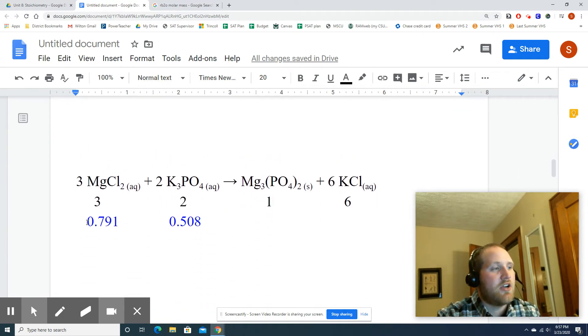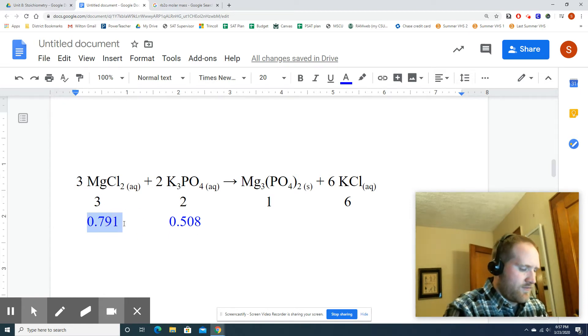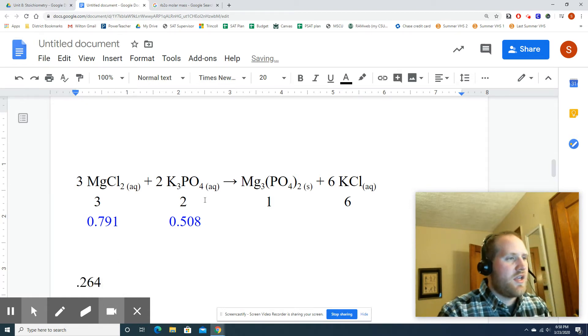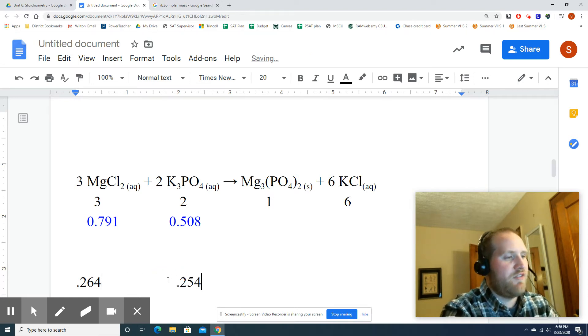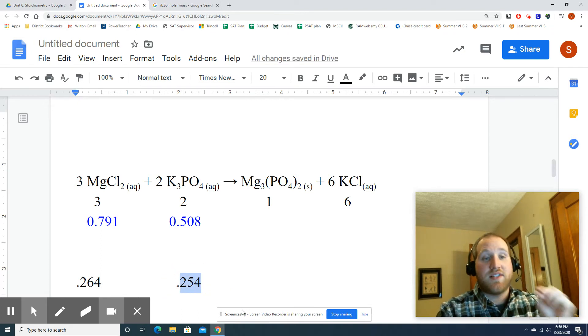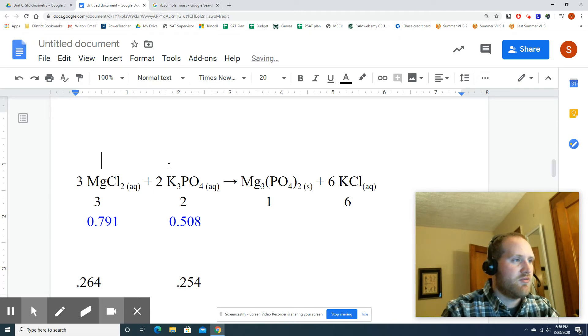So I have a few more examples ready to go where I already wrote out a balanced equation, and I already told you moles. Assume these are moles already. So if you want, you can pause the video. Otherwise, find the LR. So I'm going to take my 0.791 divided by 3, which gives me 0.264. I'm going to write that over here, 0.264. And here, I'm going to take my 0.508 divided by 2, which gives me 0.254, which is a smaller number, this one, which makes that my LR. So above this, I'm going to write LR. And above this, I'm going to write ER.